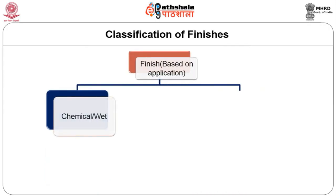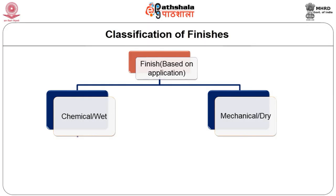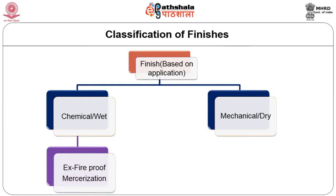Finishes are also classified as chemical finishes and mechanical finishes. Chemical finish, also called wet finish, uses acids, alkalies, bleaches, resins and other chemicals to change the appearance or property of fabric. These finishes are usually durable and permanent — examples are fireproof finish and mercerization. Chemical finish may be reactive type, where the chemical reaction changes the fiber (e.g., mercerization, flame retardancy), or deposition type, where substances are held on the fabric surface (e.g., starch).